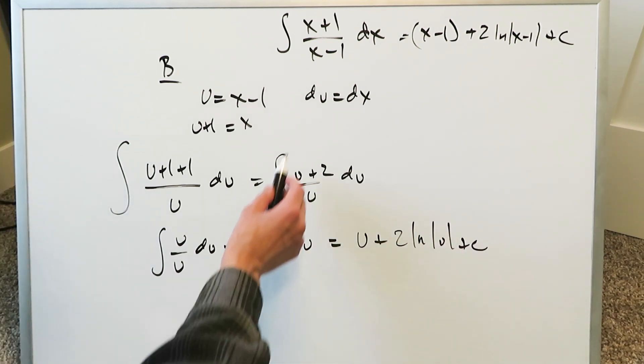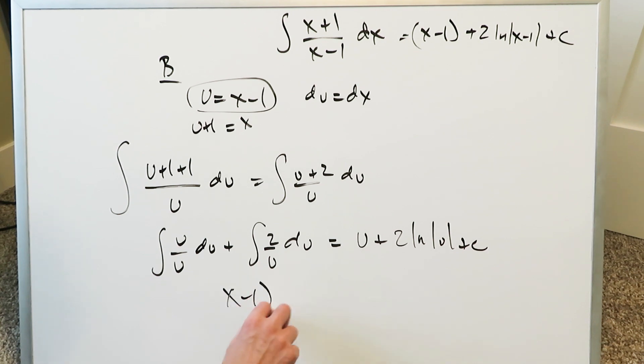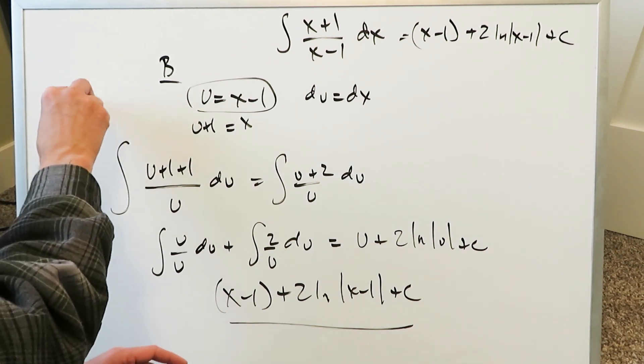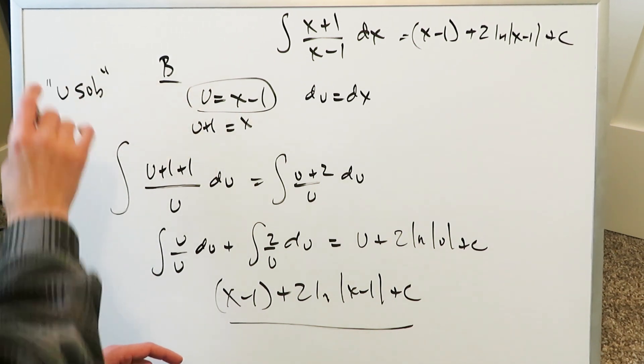And when you substitute the u which is this, look what happens. You have x minus 1, I'll parenthesize that, plus 2 natural log x minus 1 plus c which is exactly what I had determined over there. But this right here is a better approach and we'll call this the u substitution approach.